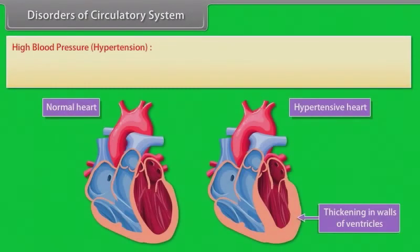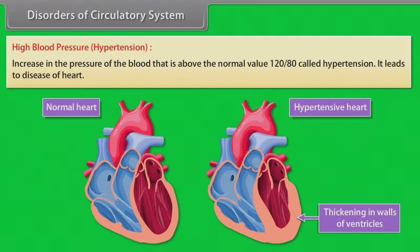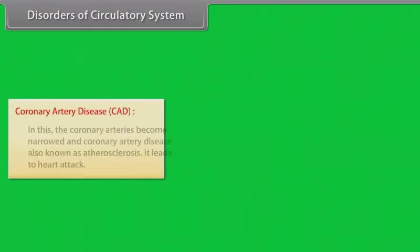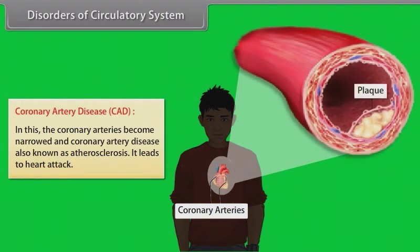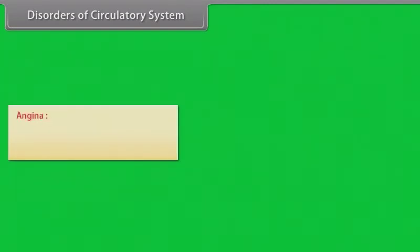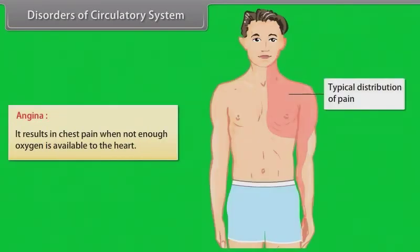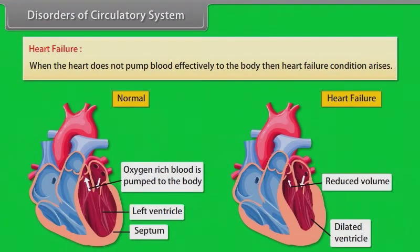Disorders of the circulatory system include: high blood pressure (hypertension), which is an increase in blood pressure above the normal value of 120/80 and leads to heart disease; coronary artery disease (CAD), also known as atherosclerosis, in which the coronary arteries become narrowed and it leads to heart attack; angina, which results in chest pain when not enough oxygen is available to the heart; and heart failure, which occurs when the heart does not pump blood effectively to the body.